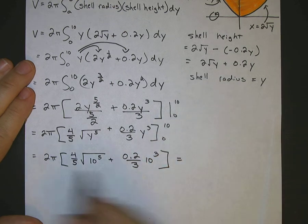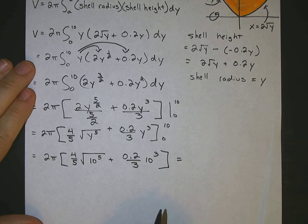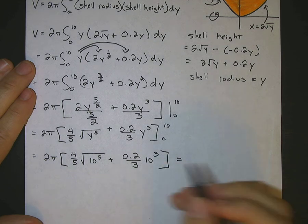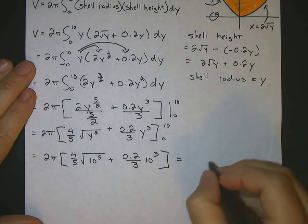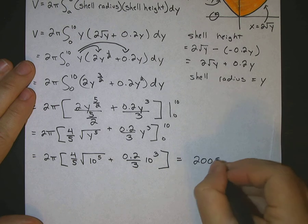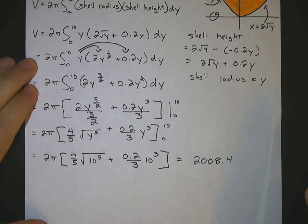Okay, and if you work all that out, mathematically, it is going to be a decimal because of this square root of 10 to the 5th, so you won't get a nice fractional answer. You will be left with either a decimal or a radical. It comes out to 2,008.4, approximately, and that's it.